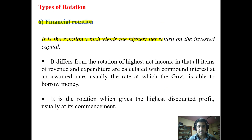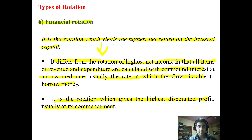The sixth type is financial rotation. It is the rotation which yields the highest net return on invested capital. It differs from rotation of highest income in that revenue and expenditure are calculated with compound interest at an assumed rate. In financial rotation, discounting and the rate of interest and time taken are taken into consideration. The rate of interest is usually fixed at the rate at which the government is able to borrow money. It gives the highest discounted profit, usually at the commencement. This completes the types of rotation.